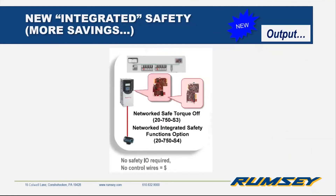If you want to have integrated safety, which is going to help you with savings, you're going to have safe torque off and also integrated safety function options. These two work together so that instead of having those control wires, your safety circuit is built into your VFD — all you have is an Ethernet cable, so there is one control wire for your safety circuit going into the VFD. When you get Ethernet IP with your safe torque off, you meet the highest level of safety needed.